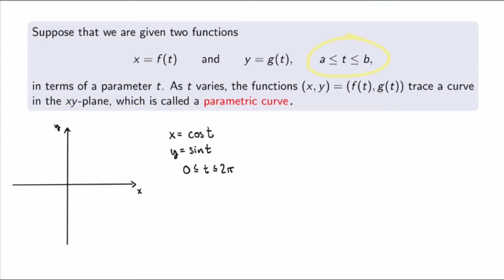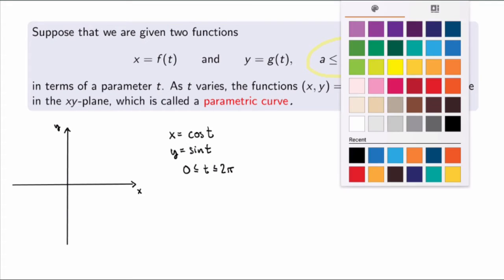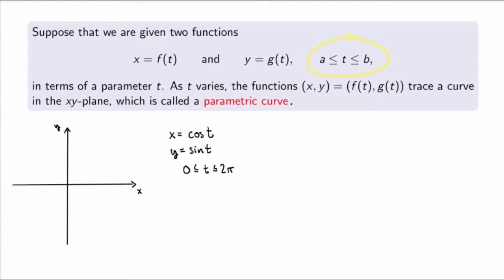How do you trace the parametric curve corresponding to these functions? The easiest way is to pick a whole bunch of values of t between 0 and 2π, plot the corresponding points in the plane, and see what the curve looks like. For t equals 0, x equals 1 and y equals 0 — the initial point. At t equals π/2, x equals 0 and y equals 1. At t equals π and t equals 3π/2, we get other points. If you plot many points you'll see that what you get is a circle of radius 1 in the xy-plane.